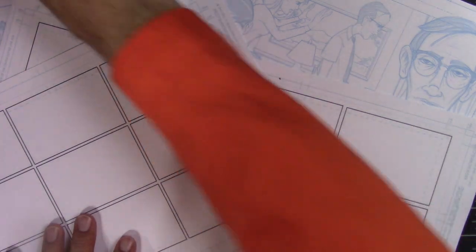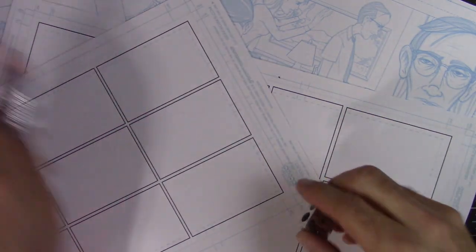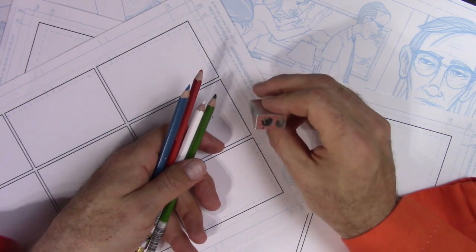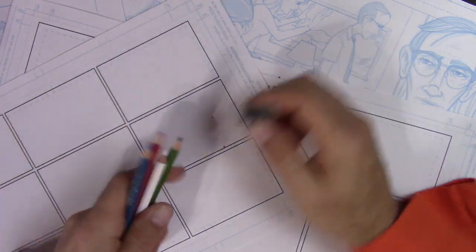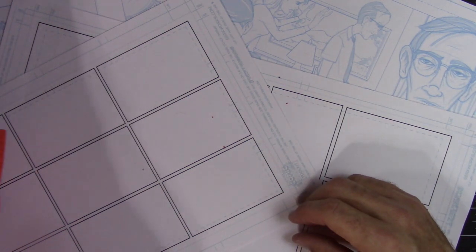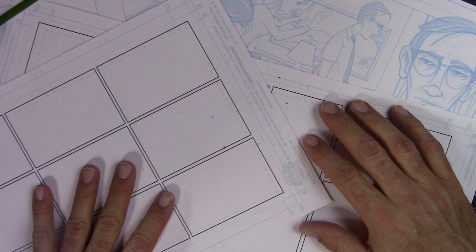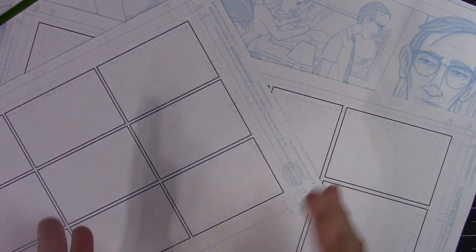Those are some of the penciling tools. When I'm using my Col-Erase pencils, I just use one of these metal sharpeners. You can use a mechanical sharpener, an electric sharpener. But I like those because they're portable. I can take them wherever I need to go. So how about we get into inking.